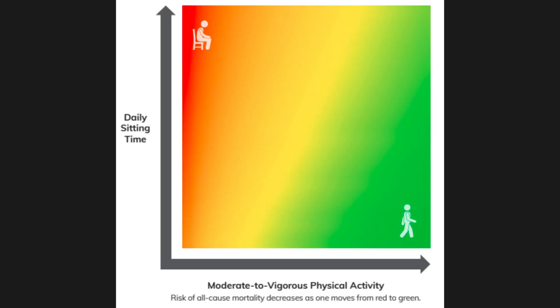On this graph, you're going to see a color shade. Going from left to right, you start off in red, and then it gradually turns into yellow, and then gradually turns into green. Red signifies a high risk of all-cause mortality, yellow is a little bit better, but best is green — when you're in the green, you are at the lowest risk of all-cause mortality.